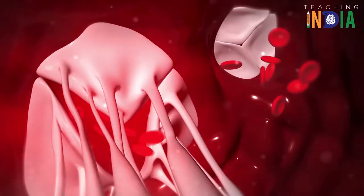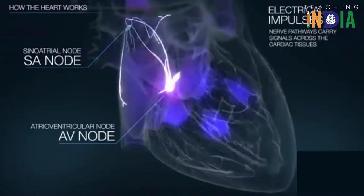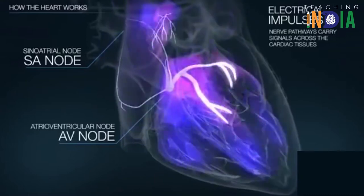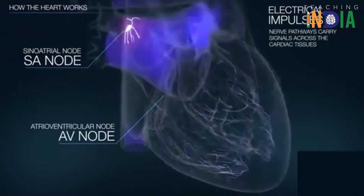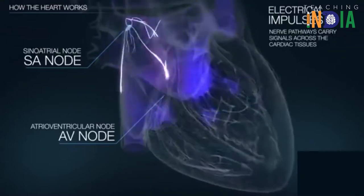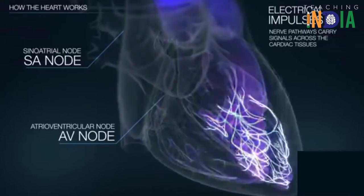The key components involved are: the Sinoatrial node, the Atrioventricular node, the Bundle of His, and the Purkinje fibers.